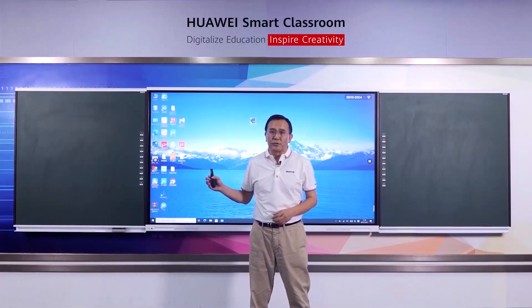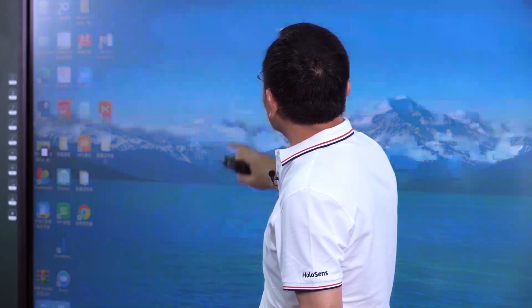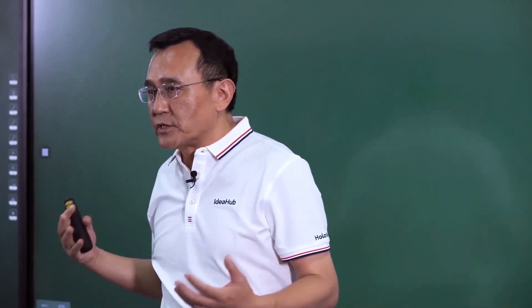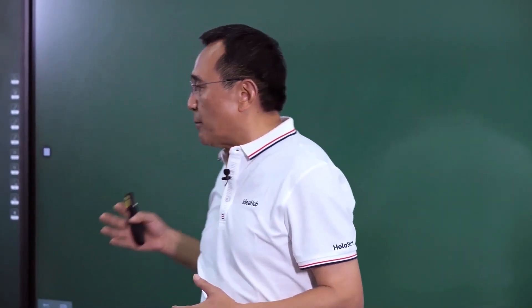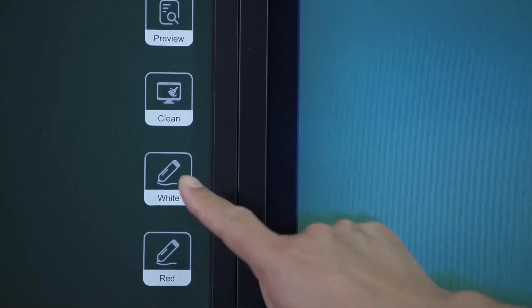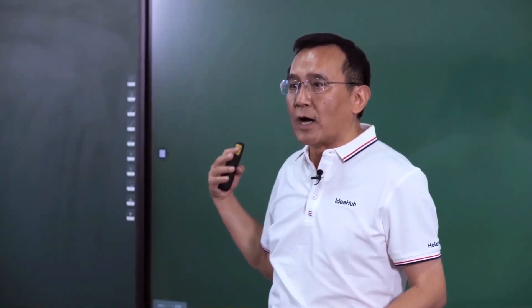Let's move to the product features. All features of the digital blackboard are implemented through the software installed on the Windows operating system. I double-click the digital board software displayed on my back, and by pressing the Y button on the blackboard, I make a connection between the blackboard and Ideal Hub.